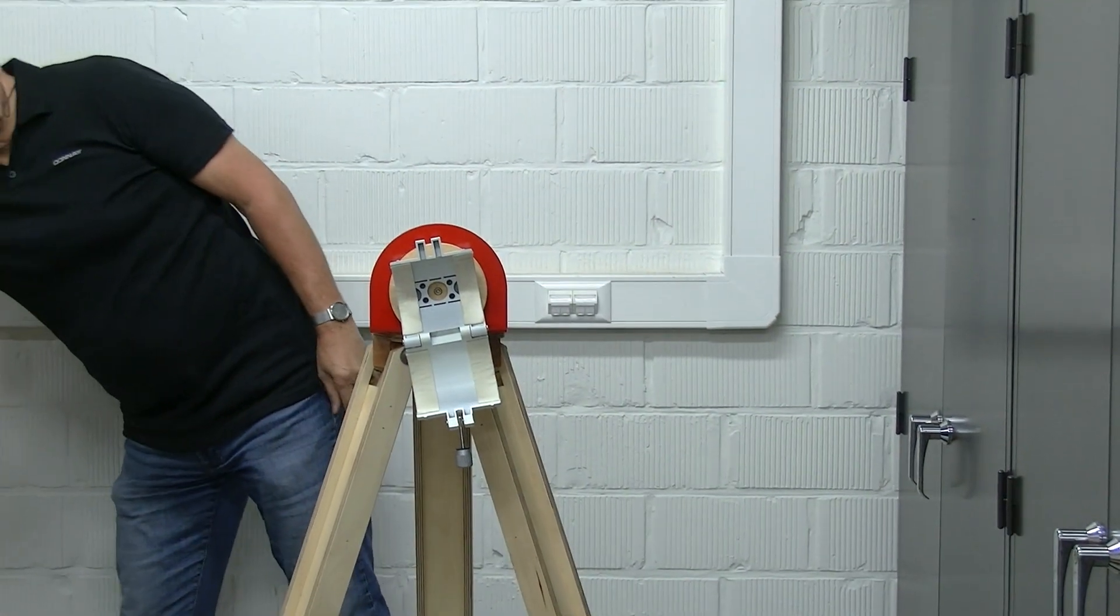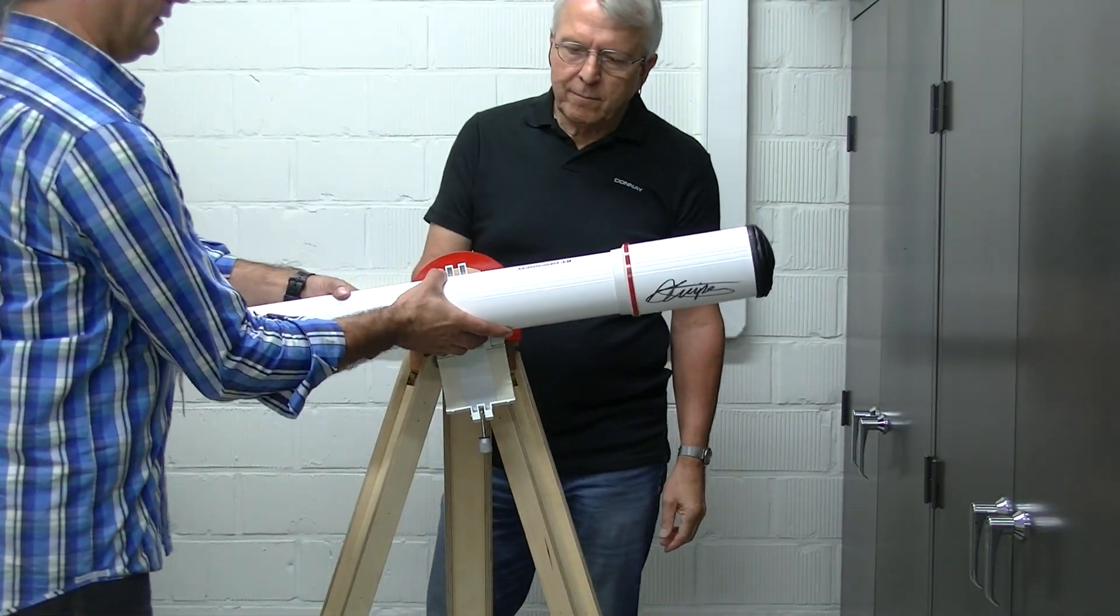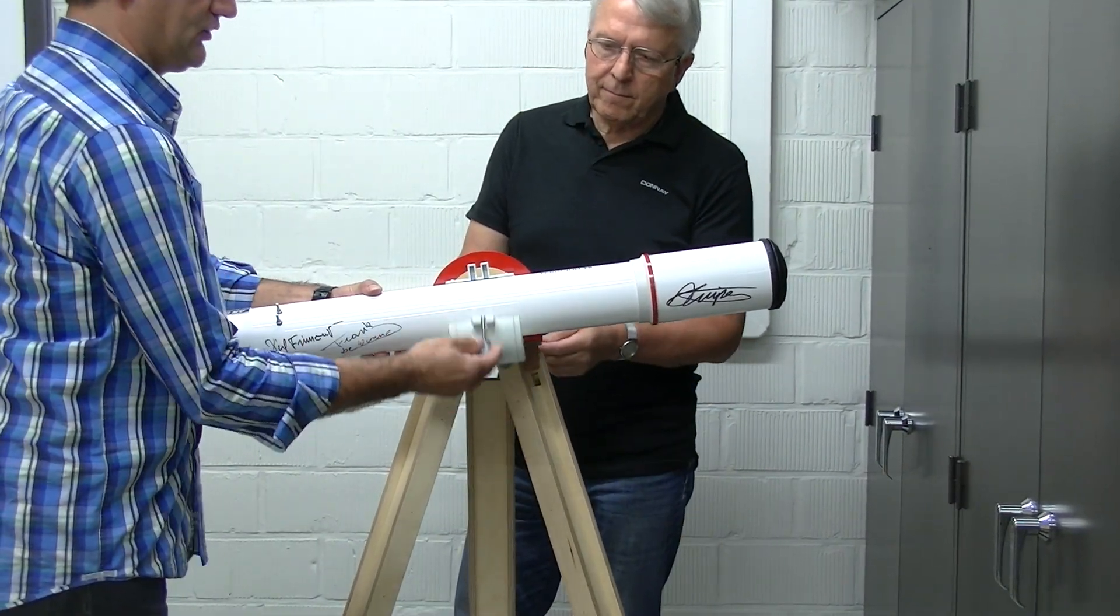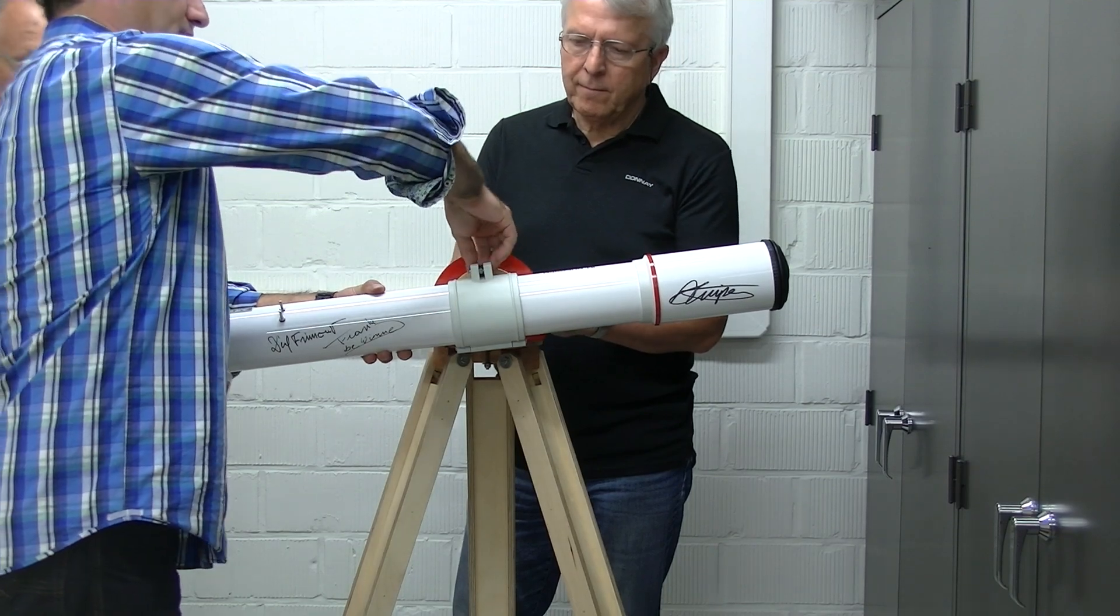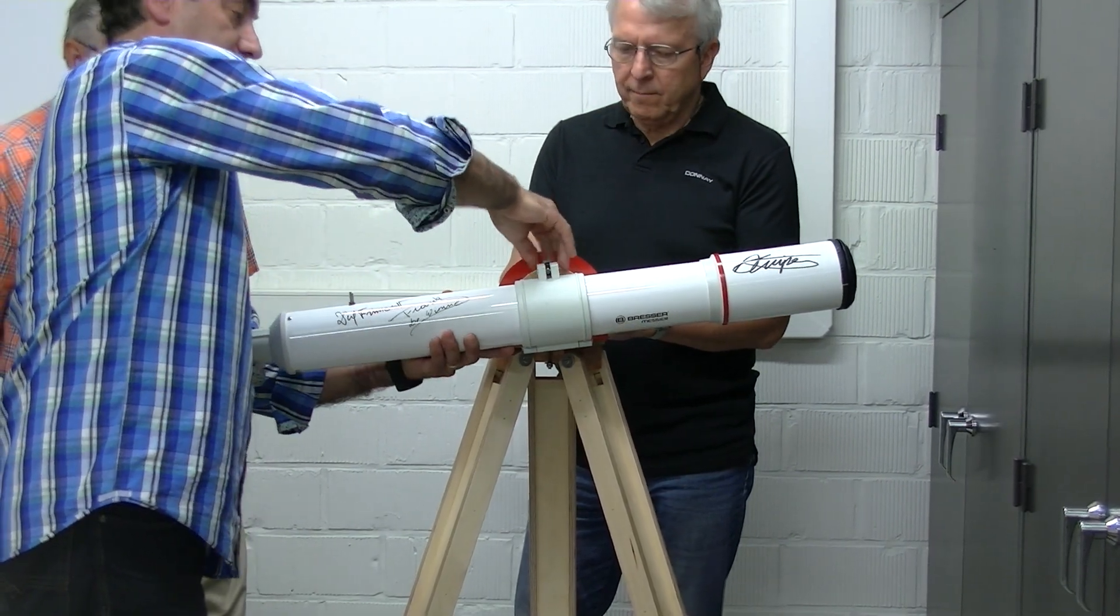So you get this white telescope with or without signatures. It goes about this position. You put the screw over it and you just tighten it.